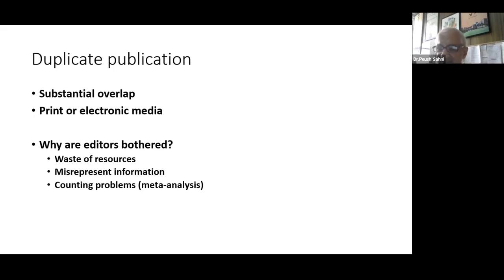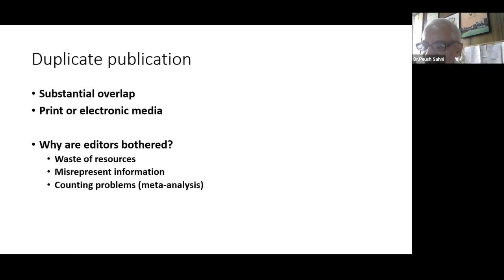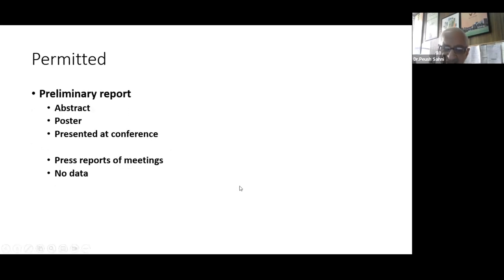Why are we as editors bothered? It's a waste of resources because we need to send papers out for peer review, and good peer reviewers are a very scarce commodity in today's scientific community. You can misrepresent information — you've done 14 patients but written them up twice, making them 28 patients in a systematic review or meta-analysis. In some form you've fabricated or falsified your data, and the counting problems become an issue in these settings.